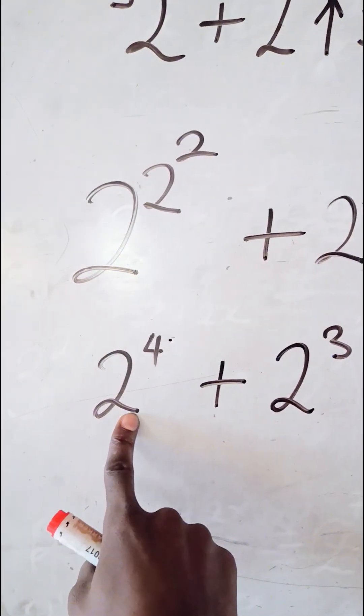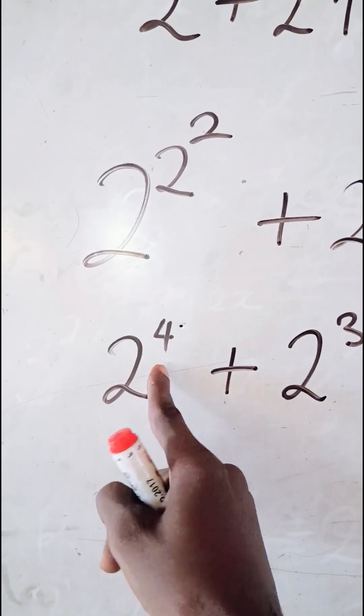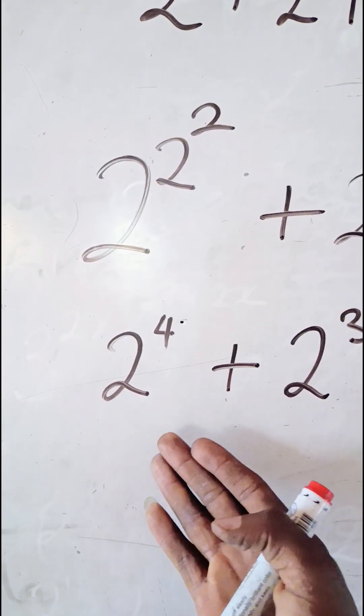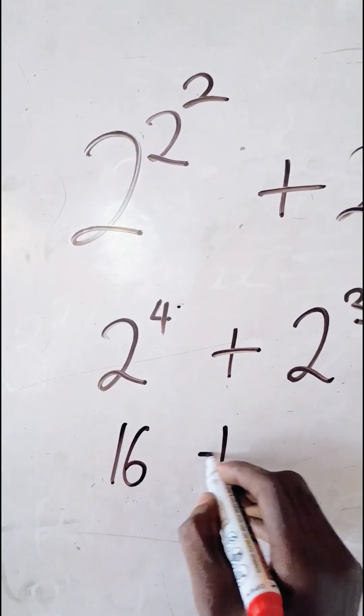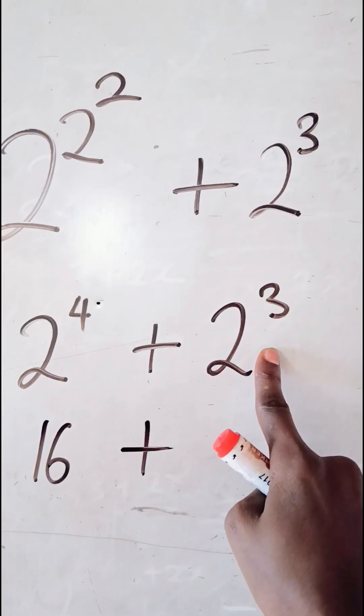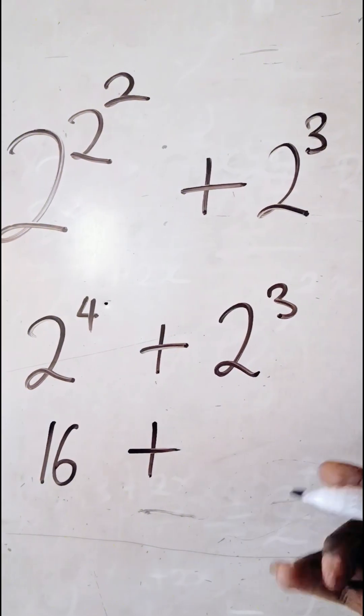Okay, then when we break this down, it simply means two times two times two times two in four places, which is going to give us 16, all right. Then we add it to two to the power of three, which is eight.